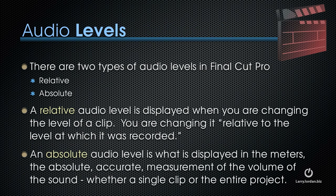There are two types of audio levels in Final Cut: relative and absolute. A relative audio level is displayed when you're changing the level of a clip — you're changing it relative to the level at which it was recorded. An absolute audio level is what is displayed in the audio meters: the accurate measurement of the specific volume of the sound, whether for a single clip or a mix of the entire project.